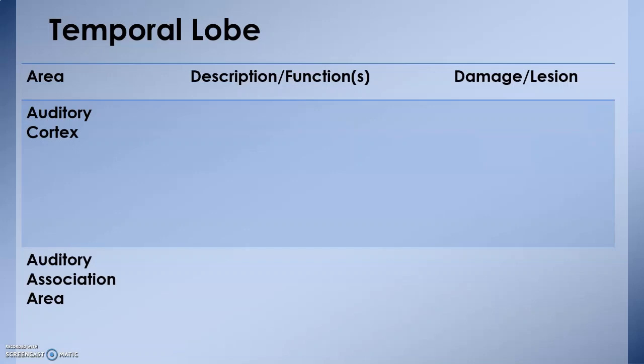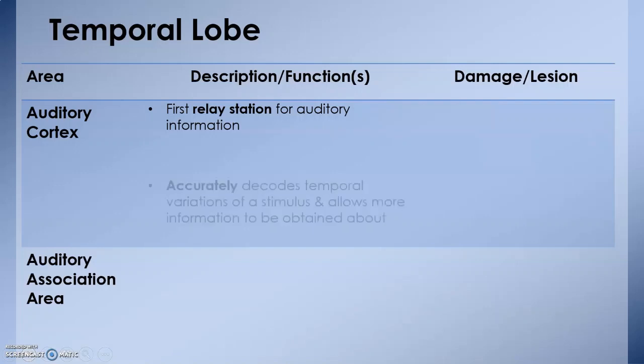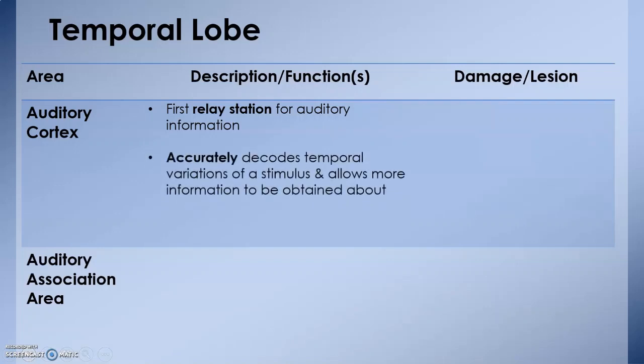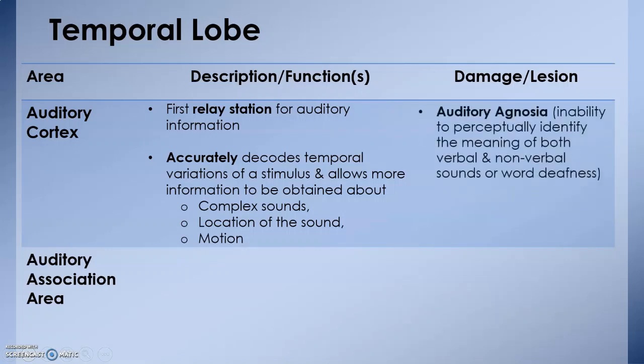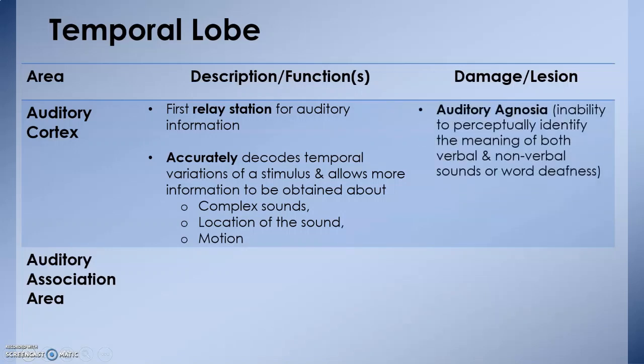The auditory cortex is the first relay station for the auditory information in the cortex. It accurately decodes temporal variations of a stimulus and allows more information to be obtained about complex sounds—where it is coming from or whether it is in motion. Damage to the auditory cortex can induce a condition called auditory agnosia. You will perceptually be unable to identify the meaning of verbal and non-verbal sounds, or in other words, word deafness.